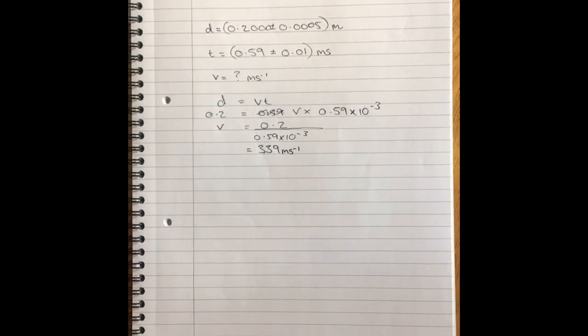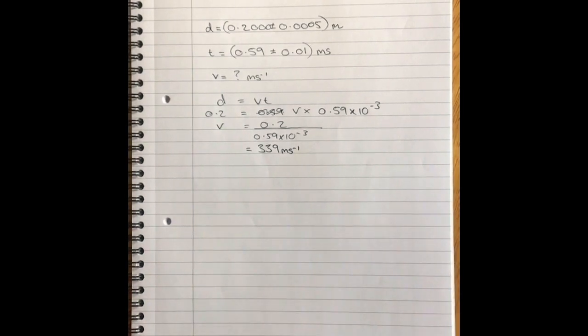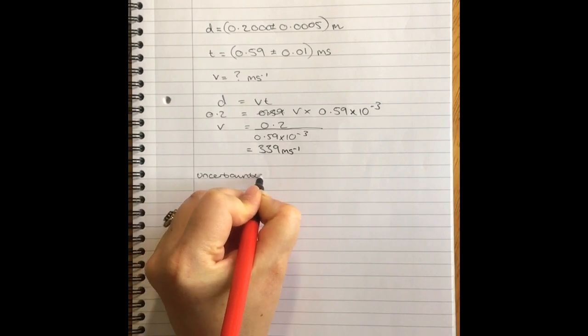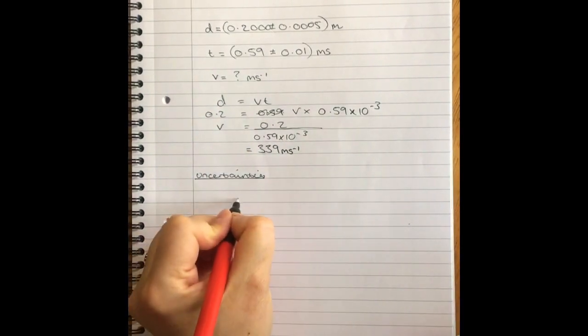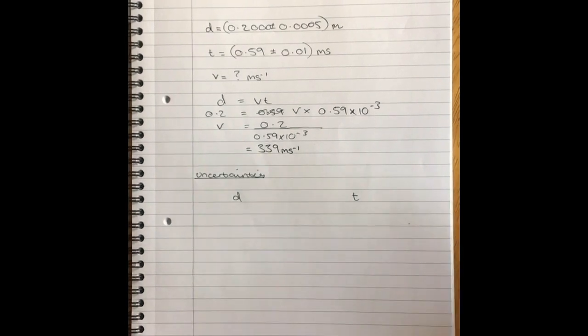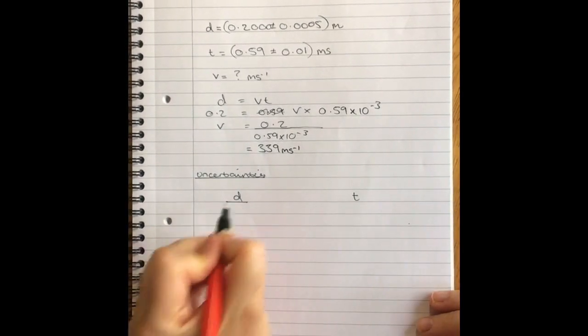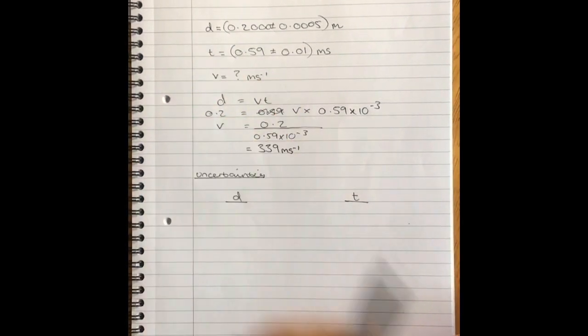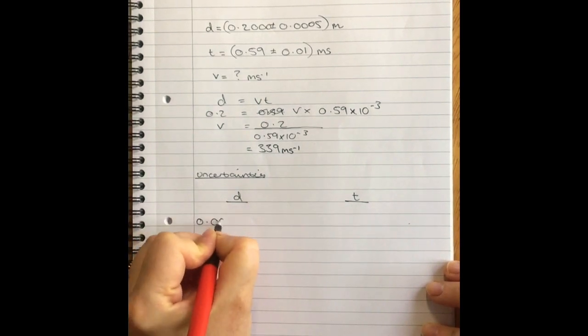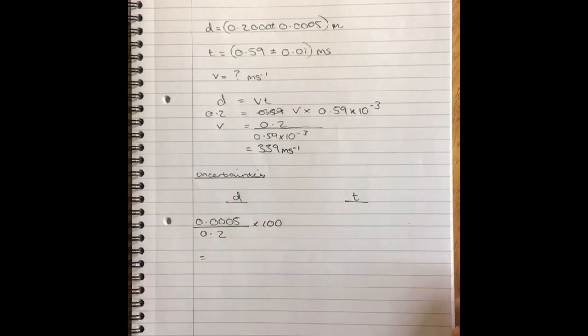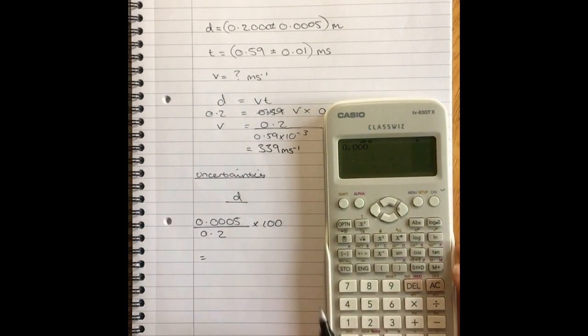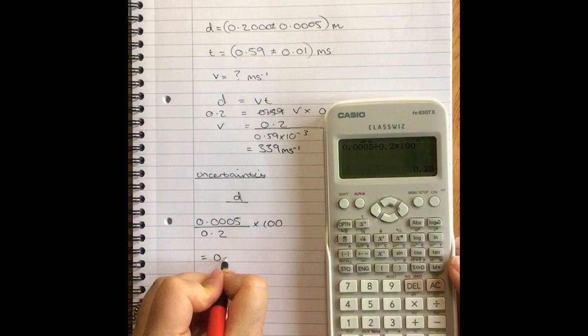So now that we've got our answer, we want to find out just how uncertain we are that that is the true answer. What is the range of possible numbers our data could have given us? So now we're going to deal with the uncertainties. So because these are measurements in completely different units, to compare them, we have to have unitless uncertainties. The first thing we're going to do is turn those uncertainties, those absolute uncertainties into percentage uncertainties.